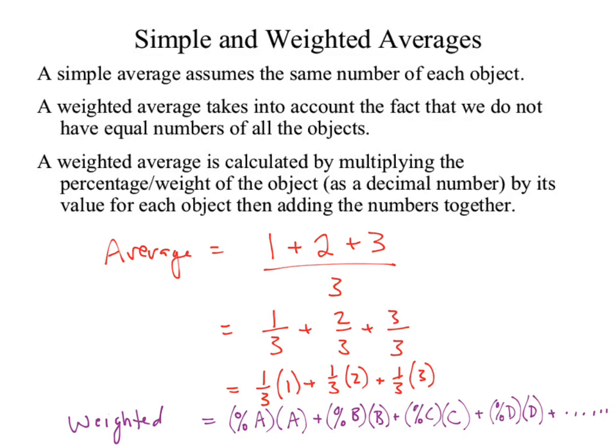So it is already embedded in how we do a simple average. We're assuming an equal weight. If you only have two samples, what is the assumed percentage? 50%. Four things, we're assuming each is 25%. It is already embedded in how we do a simple average.